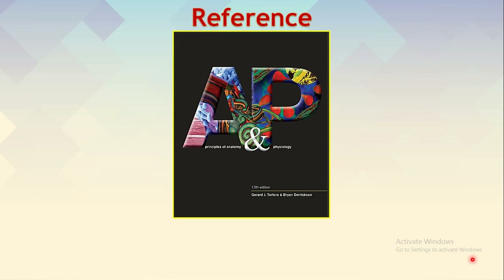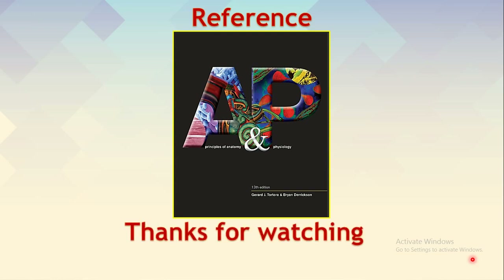We have covered the protective layers of the spinal cord, the external anatomy, the internal anatomy, and the internal organization which helps in conveying and processing information. We have seen the different pathways by which information can be conveyed towards and away from the CNS. Thank you for watching.